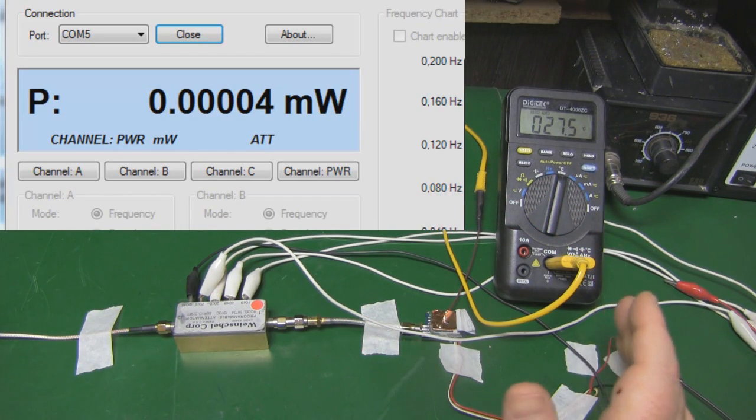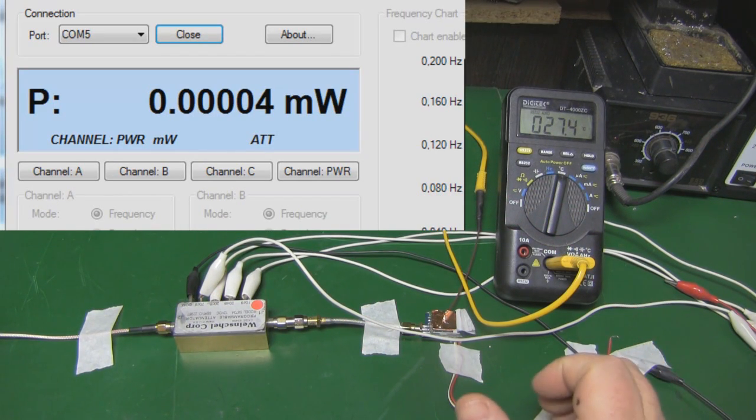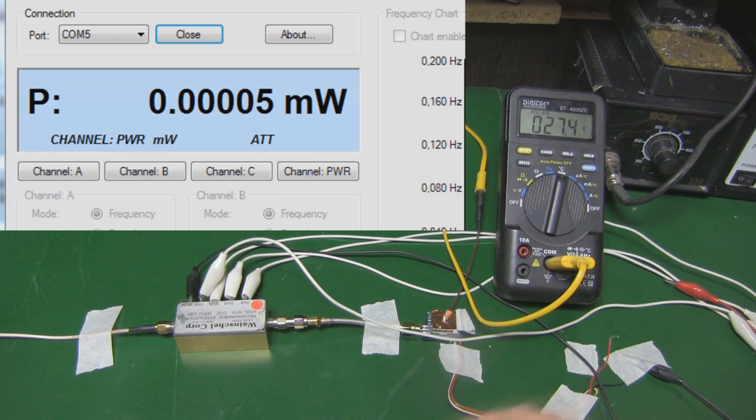At the moment the multimeter is registering about 27.5 degrees C, so it's about room temperature. I'll apply some power to the little transmitter and then we can monitor the output. We can see how it does start to drop off significantly once it starts to get into about 50 degrees C.